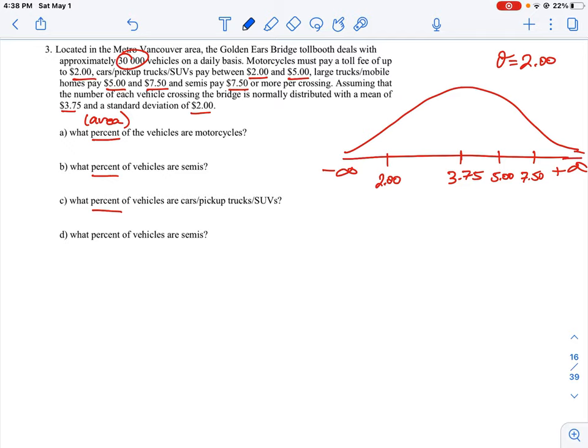We want to know the percent of vehicles that are motorcycles. I'll switch colors and shade in the first part. We're looking for area, and we know the limit for motorcycles is $2.00, so anything from negative infinity up to the $2.00 mark represents motorcycles. For question a, we need to calculate the area covered between negative infinity up to the $2.00 mark. That's simply our norm cdf function.